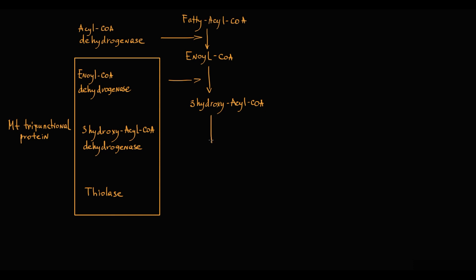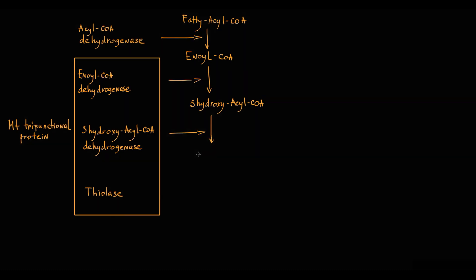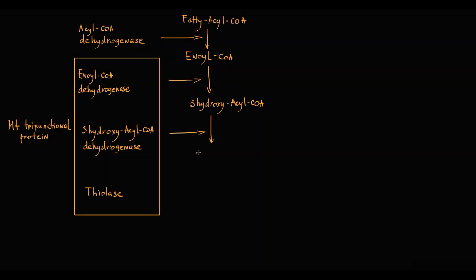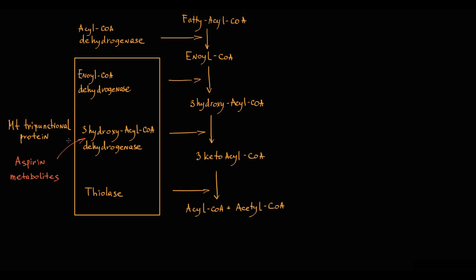Enoyl-CoA is then converted by the first enzyme in mitochondrial trifunctional protein to 3-hydroxy acyl-CoA. This is converted by 3-hydroxy acyl-CoA dehydrogenase to 3-keto acyl-CoA, which is degraded by thiolase to acyl-CoA and acetyl-CoA.